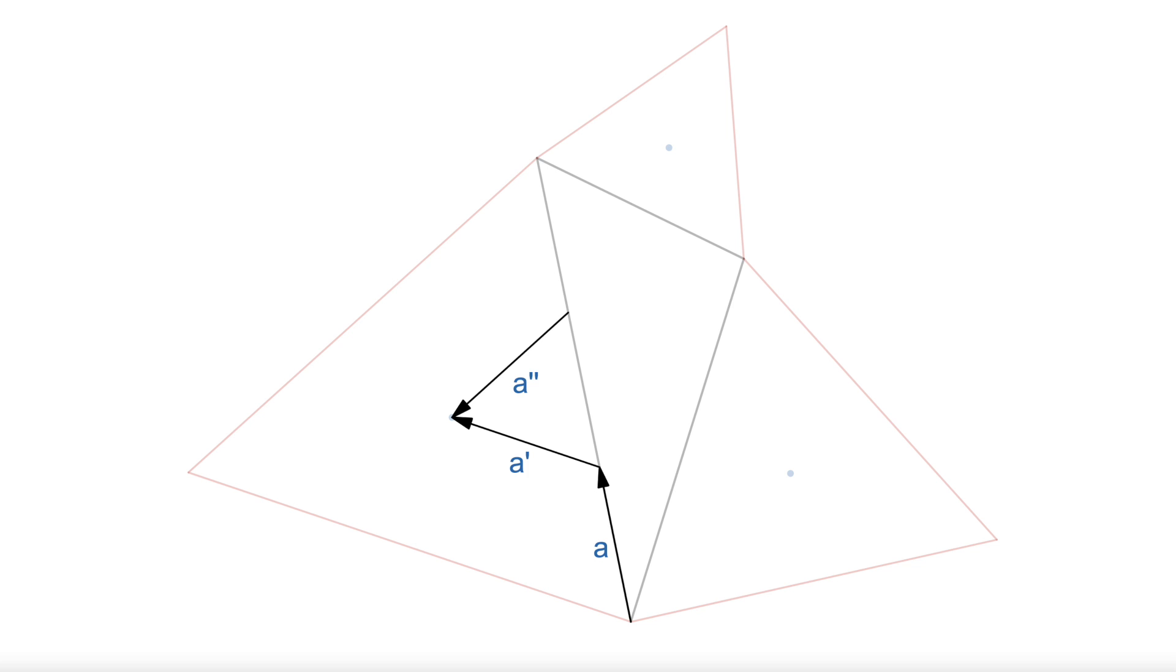But we'll want to continue in the same direction, so we'll be using negative a double prime. Rotating that by 60 degrees counterclockwise gives us negative a triple prime, which, it's not hard to see, is the same as a.